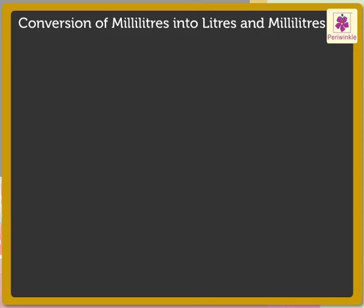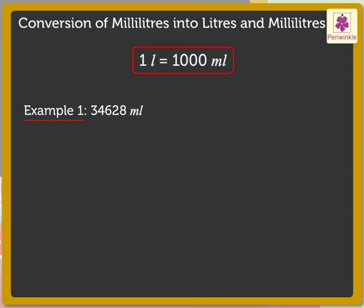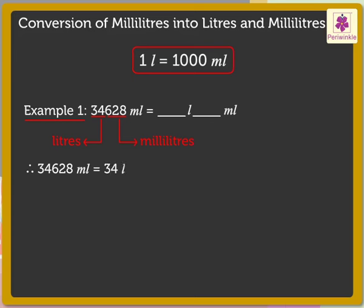We already know that one liter is equal to one thousand milliliters. Let's take 34,628 milliliters. The first three digits from the right show the milliliters — that is, 628 — and the remaining digits show the liters — that is, 34. Therefore, 34,628 milliliters is equal to 34 liters 628 milliliters.